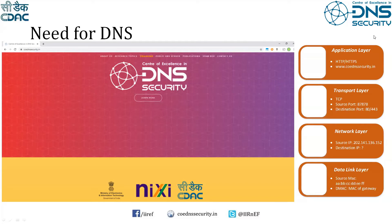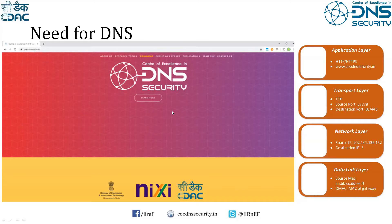This is how DNS works. When you use the DNS protocol for querying, it gives you the following response. For example, querying the IP address for www.cdac.in gives you a specific IPv4 address, or if querying for IPv6, you get the IPv6 address. Similarly, reverse translation is also possible - if you give an IP address, you can get the domain name back, for both IPv4 and IPv6.